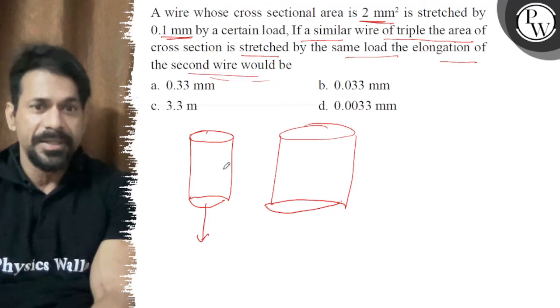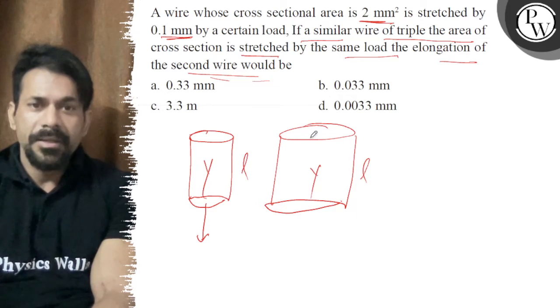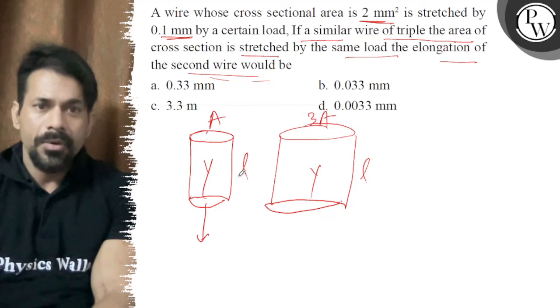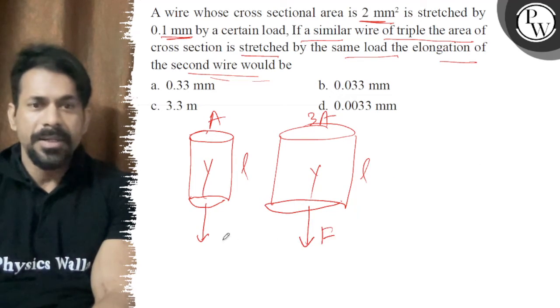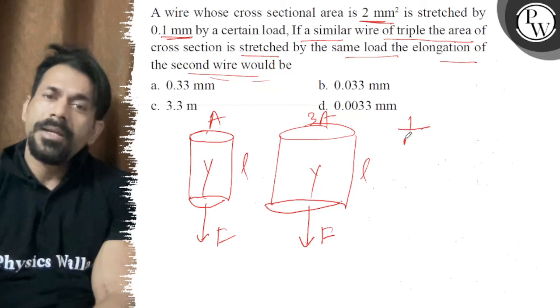The whole thing is same and we have the load same. How do we have elongation? So 1 by A times ΔL is constant because if all the things are constant, it is just two.